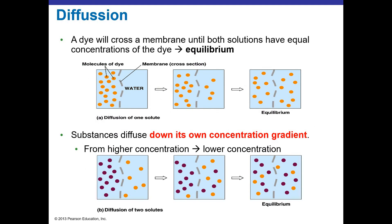Diffusion always eventually reaches equilibrium. In an experiment with a membrane that has small pores, a gold dye starting on the left-hand side will begin to diffuse across the membrane if the pore size allows it. At some point, the dye reaches equilibrium — an equal number of dye molecules on each side of the membrane.